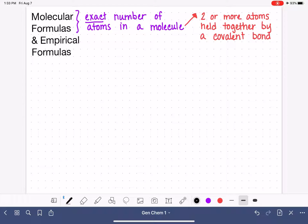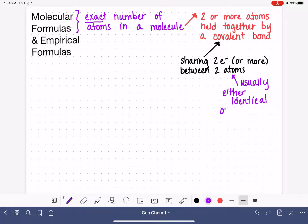Now, a covalent bond is the result of sharing two electrons or more between two atoms. And these two atoms that are sharing electrons are usually, almost always, they are either identical to each other, like two oxygen atoms or two hydrogen atoms, or they are two non-metals.